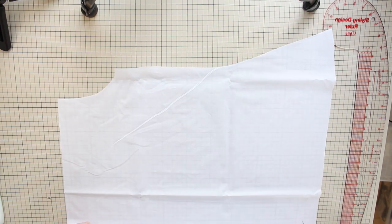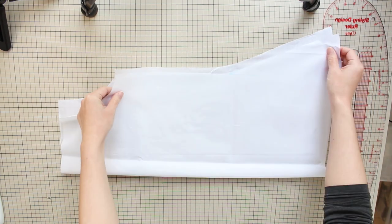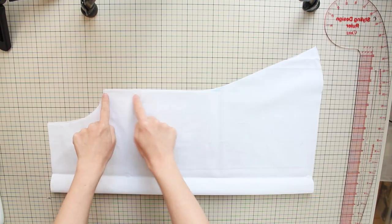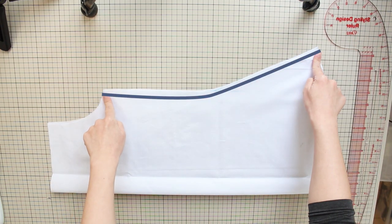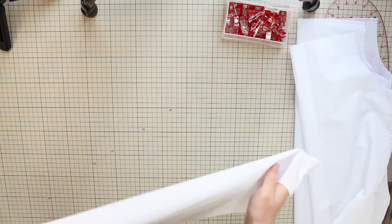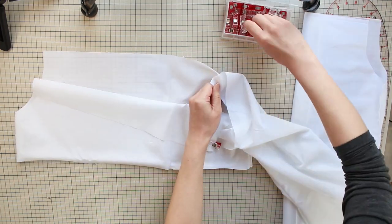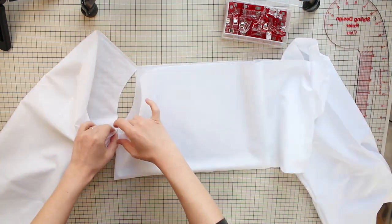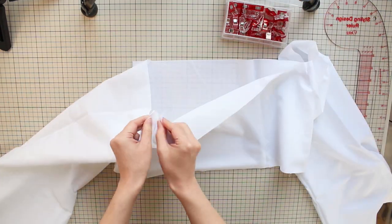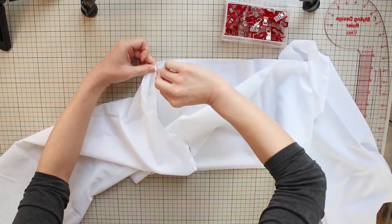For sleeve panels, fold each one right sides together and do a straight stitch along the side edge with a 1 centimeter or 3 eighths of an inch seam allowance. Then match up the curved sections of the bodice and sleeves right sides together and do a straight stitch with a 1 centimeter seam allowance.